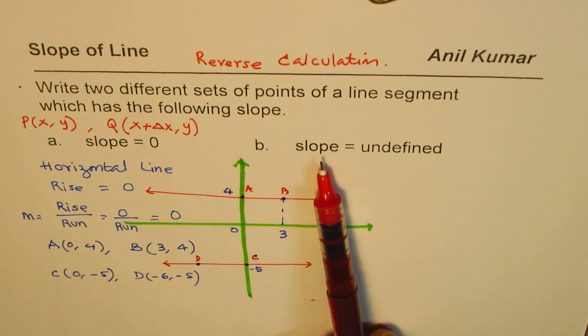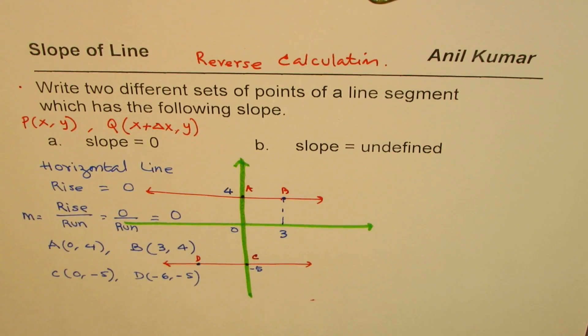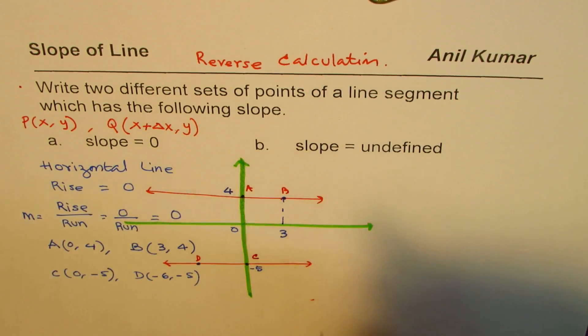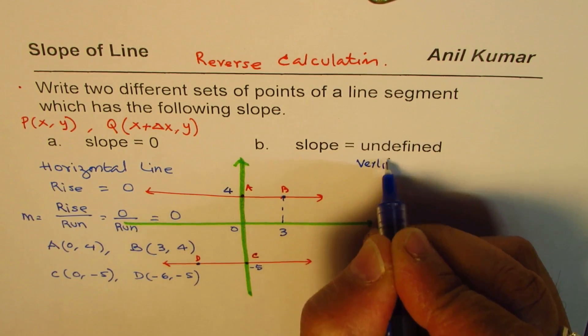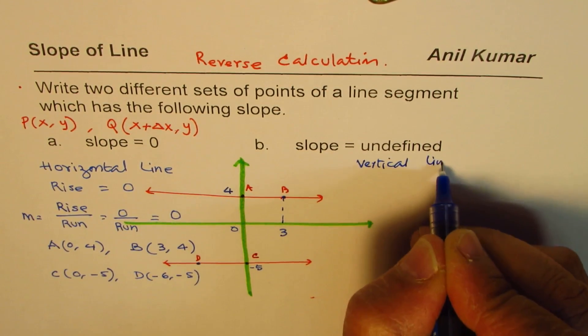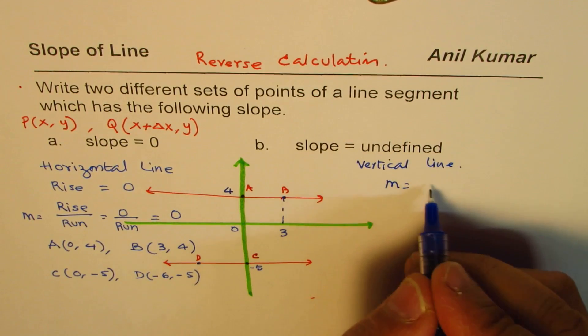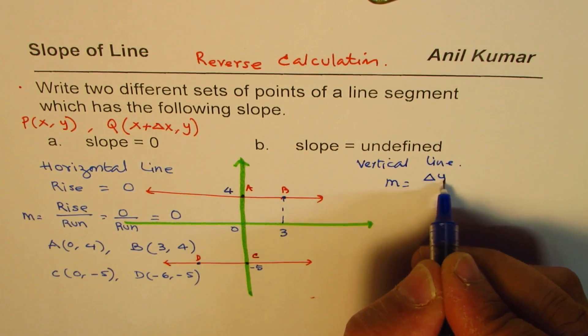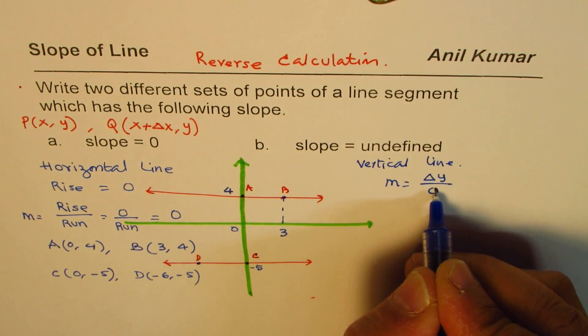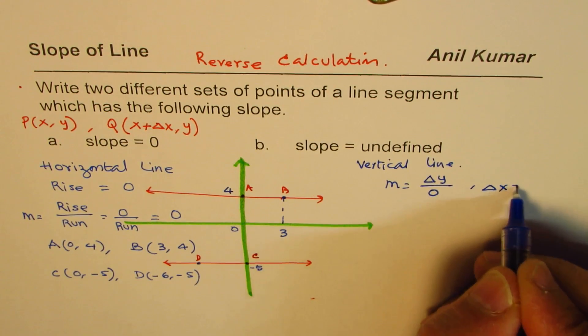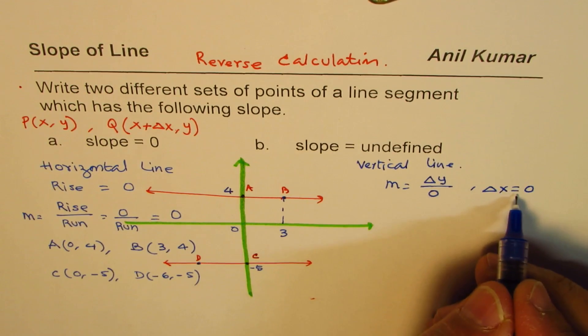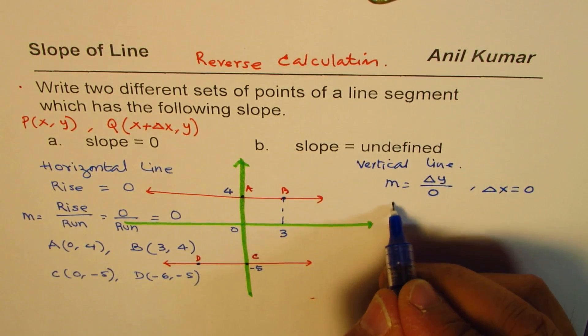Now let's look into this part. Undefined slope means what? It means vertical line. We are saying slope is undefined—that means change in y is something but we are dividing by zero. We are saying that delta x equals zero, so when you divide by zero what do you get? You get undefined slope.